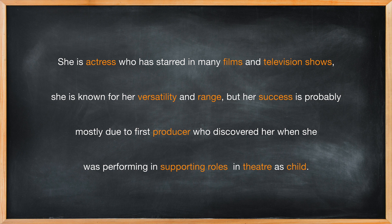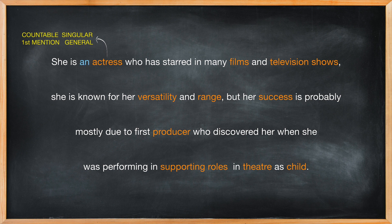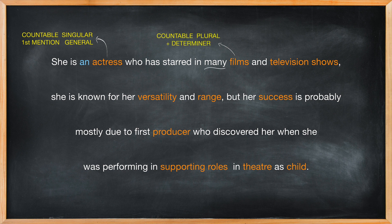Actress is a countable singular noun mentioned for the first time in general. She is one actress out of many, so the indefinite article 'an' is a good choice. Films is a countable plural noun mentioned for the first time, but it already has the quantifier determiner 'many' in front of it, so no article is required.